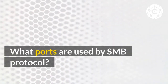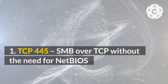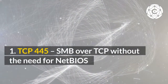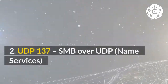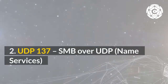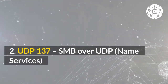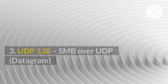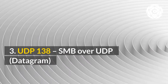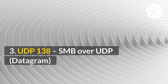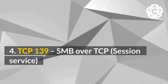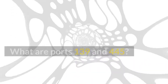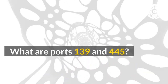What ports are used by SMB protocol? 1. TCP 445 — SMB over TCP without the need for NetBIOS. 2. UDP 137 — SMB over UDP, Named Services. 3. UDP 138 — SMB over UDP, Datagram. 4. TCP 139 — SMB over TCP, Session Service.